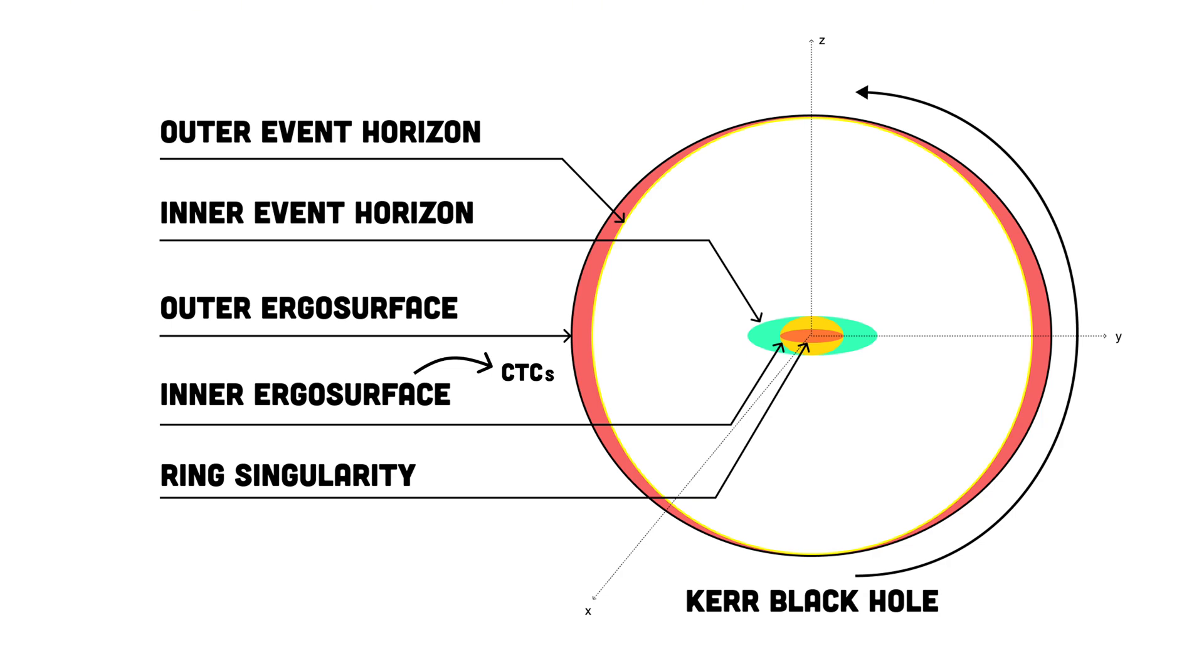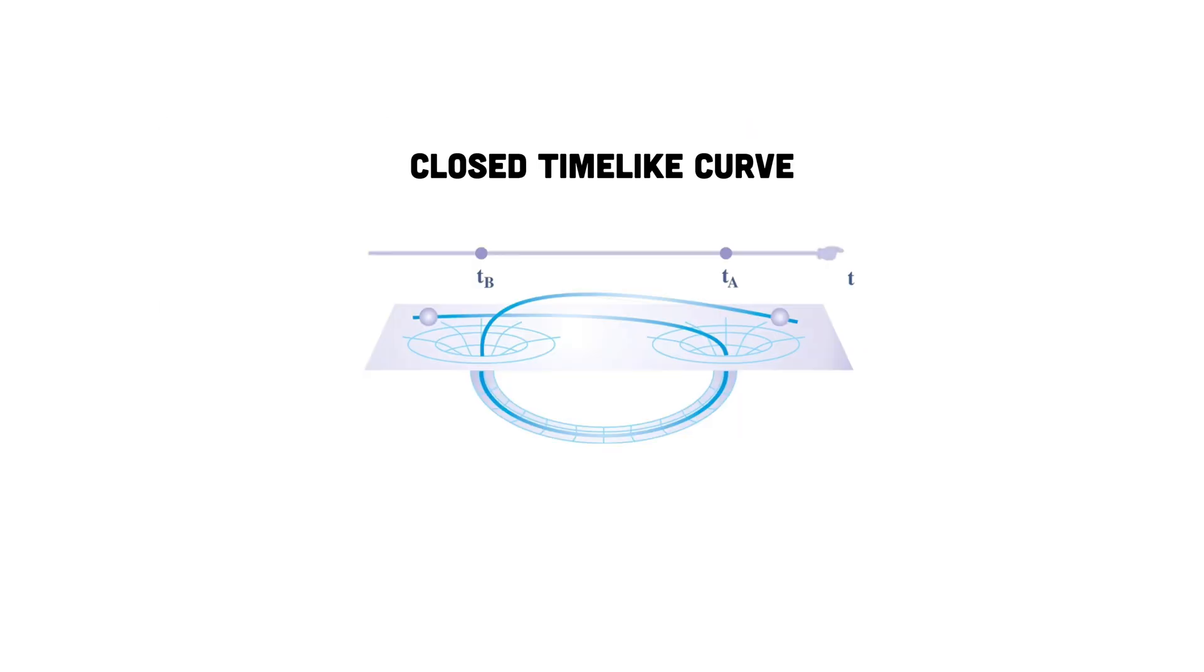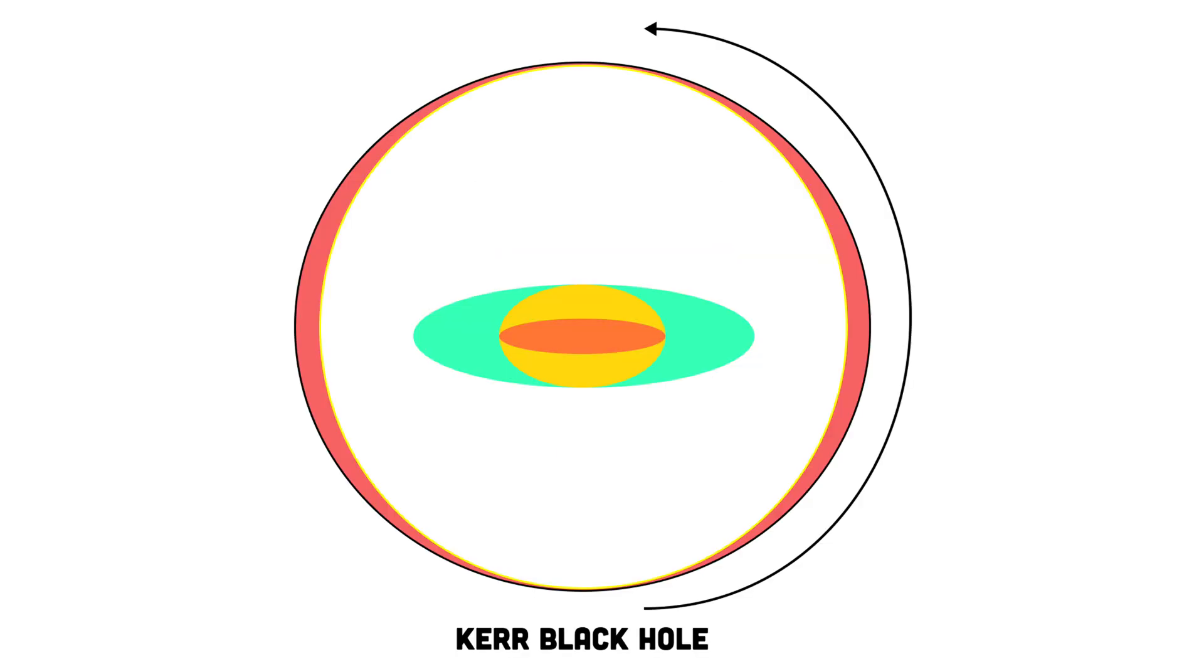This inner region theoretically harbors closed time-like curves, paths in space-time that loop back on themselves, potentially allowing travel to the past. Theoretically, a Kerr black hole could allow time travel through a region of space containing closed time-like curves. Here's how it might work.